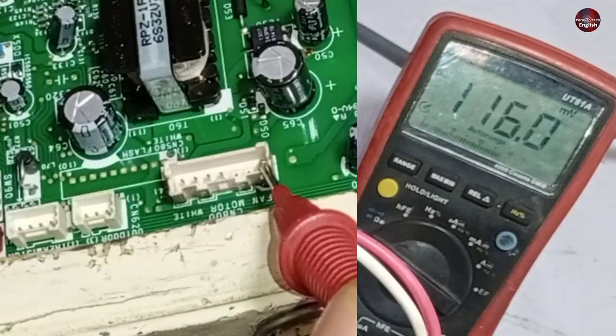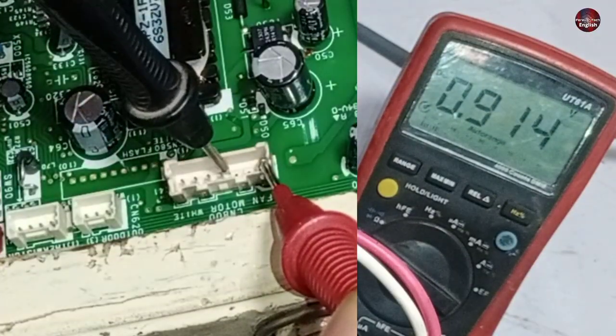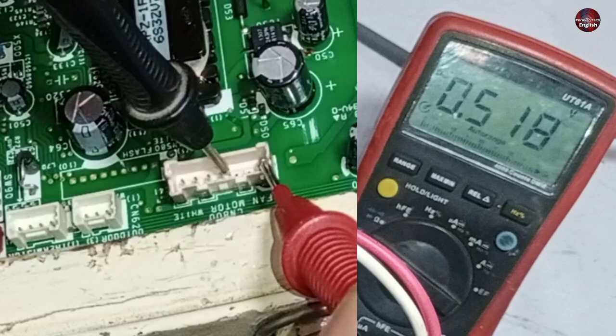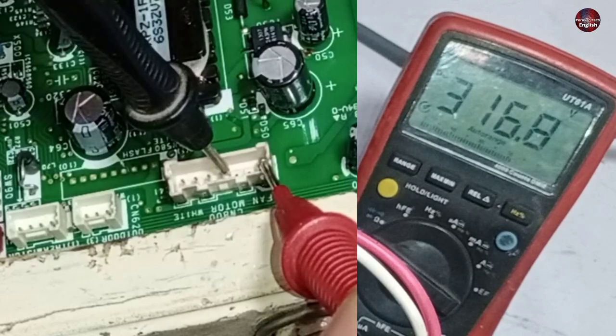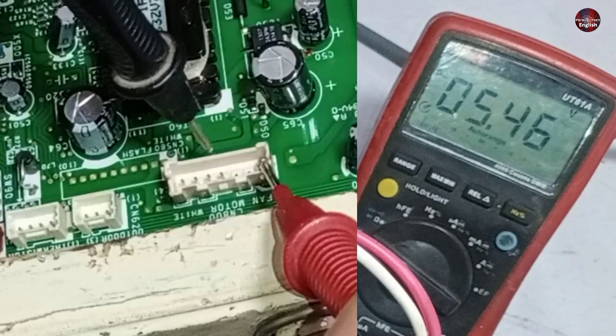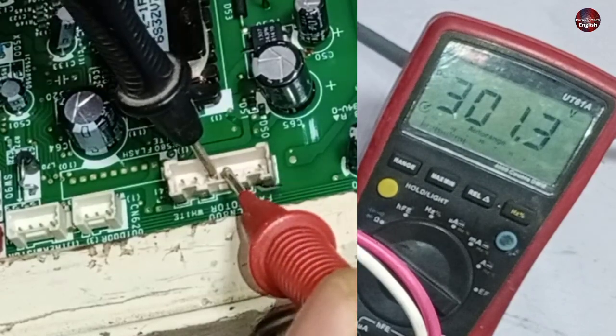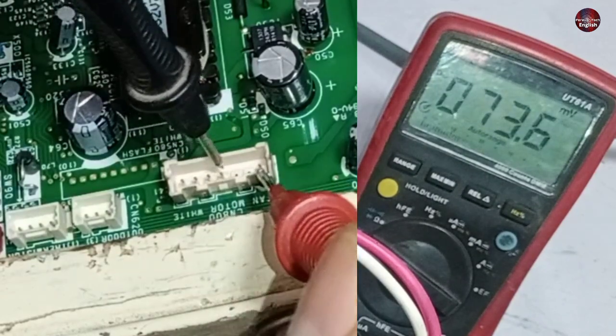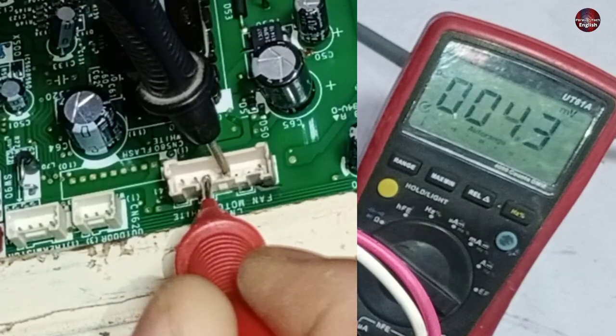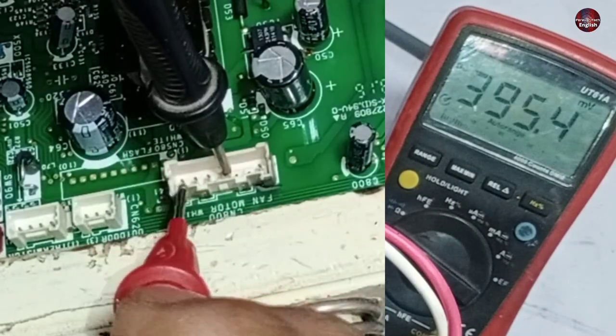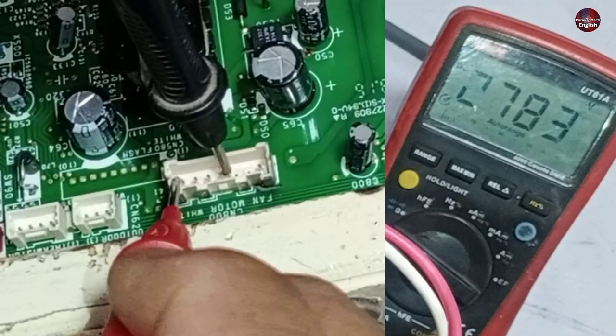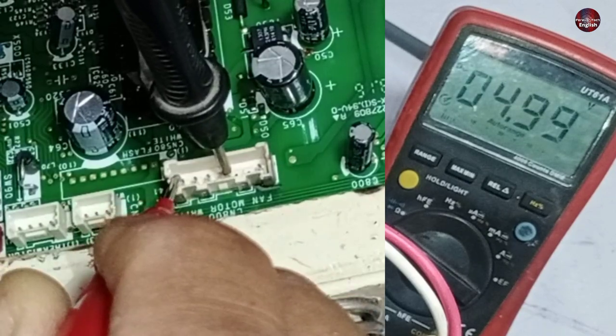Now I have attached the positive probe at pin number 1 of the fan connector and the negative probe at the ground pin number 4, and as you can see, the multimeter is showing 316 DC volts. Now we will check the 15 volts by placing the positive probe at pin number 5 and the negative probe on the ground at pin number 4, we are getting 15 volts here. Now I will check the last pin of the connector by placing positive probe at pin number 7, we are getting 5 volts here.